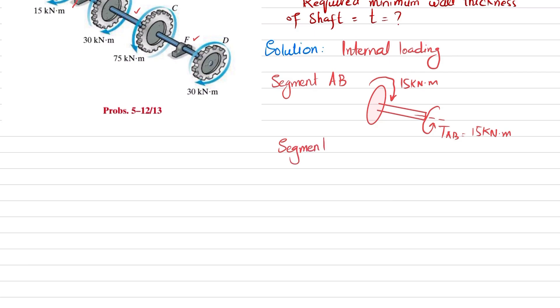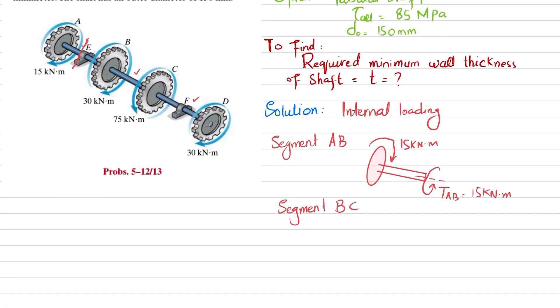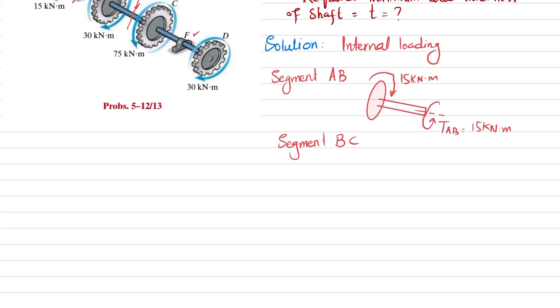For segment BC, you have to cut the shaft over here and draw the free body diagram. This is your first shaft AB, and then you have another gear at this point. There is a shaft which is represented like this, and this shaft is your BC. This is your A.